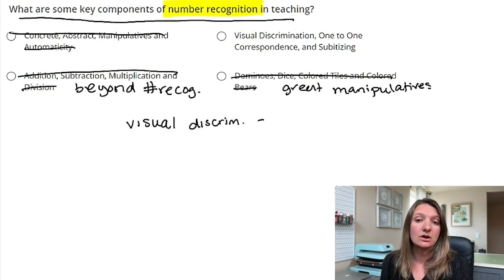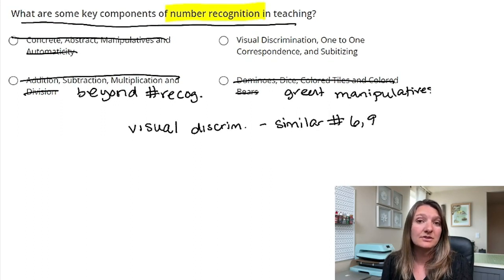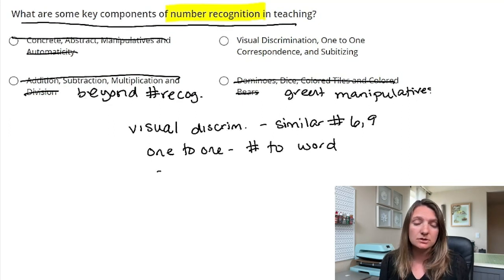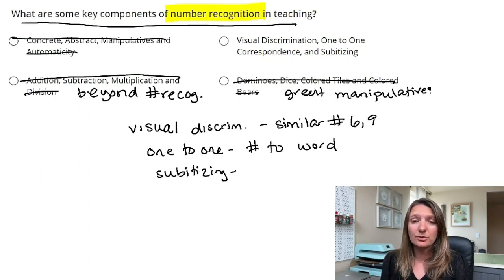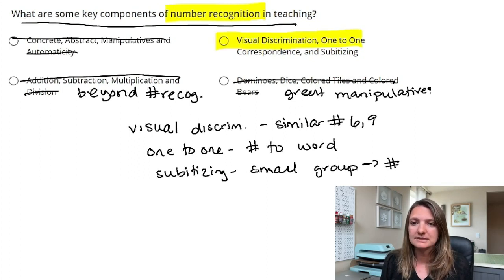So we're left with C: visual discrimination, one-to-one correspondence, and subitizing. Visual discrimination is when you have two similar numbers that look alike — for instance, six and nine. If a student is able to tell the difference between those two, that's visual discrimination. One-to-one correspondence is when a student counts just one block at a time: they pull one block and say one, two, three, etc. Subitizing is when you throw out a group of things — whether blocks or another manipulative — and the student is able to look at all of them and say, 'that's four blocks.' So our answer is C.